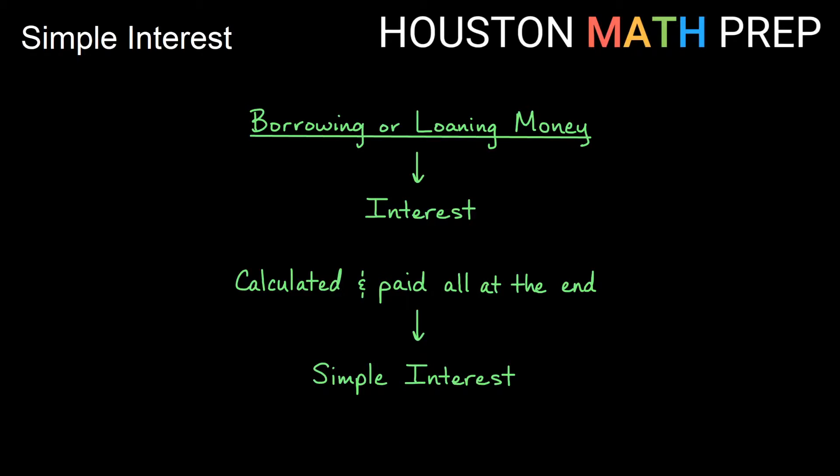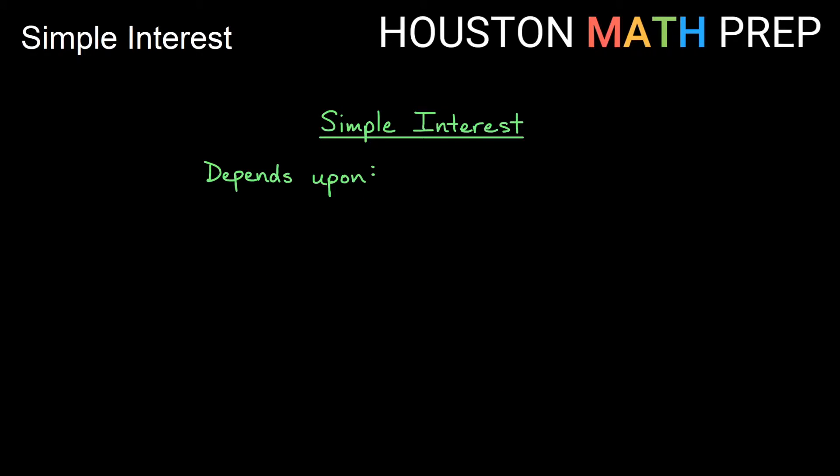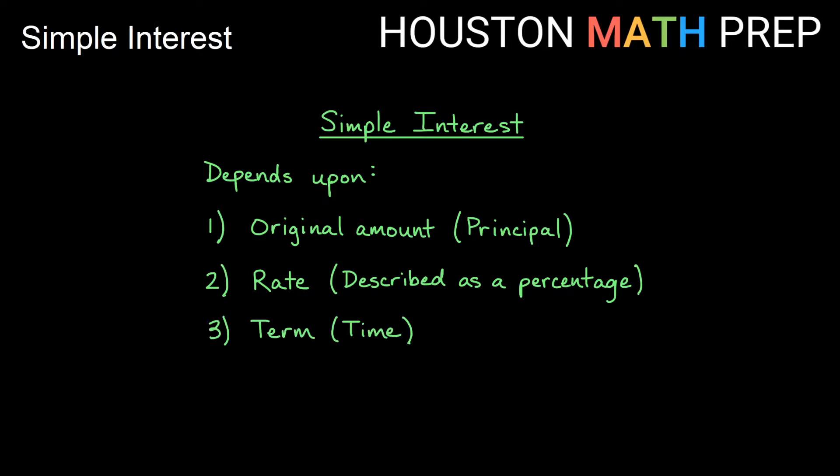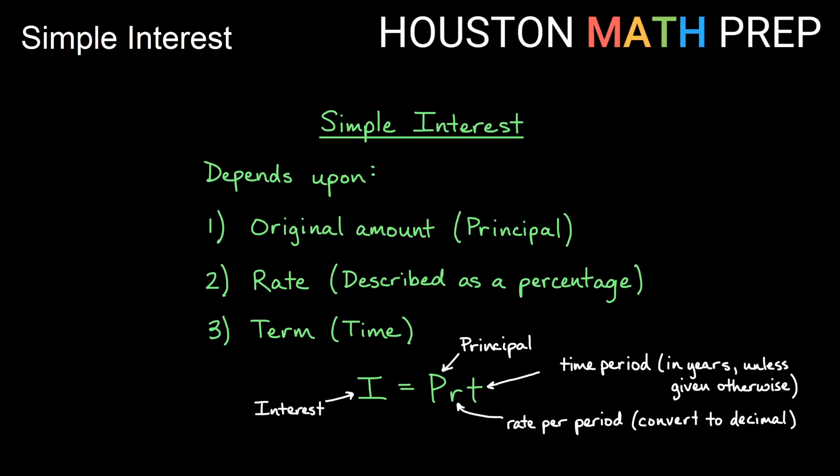The amount of simple interest that you pay or receive on that loan at the end depends on a few things. It depends on the original amount which we call the principal. It depends on the interest rate. Generally the rate is given to you as a percentage, although when we calculate it in formulas we will usually use a decimal. And lastly, simple interest also depends on the amount of time or the term of the loan, how long the principal is loaned before the payback date. So if interest depends on these three things we can say that the interest equals P times R times T, the principal times the rate times the time.